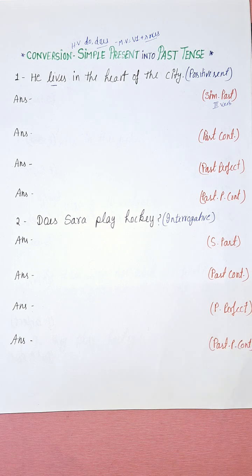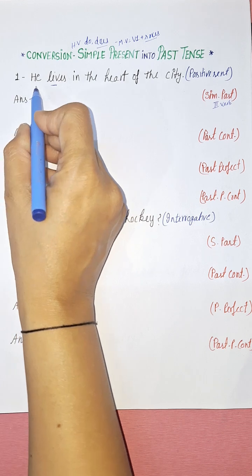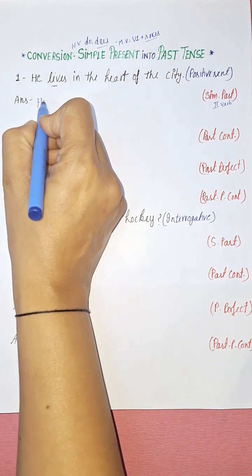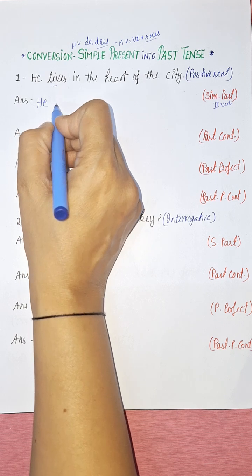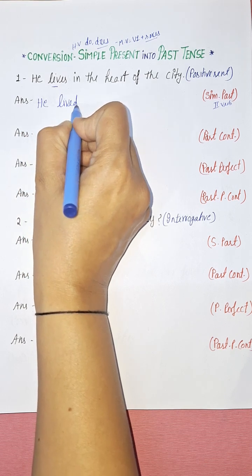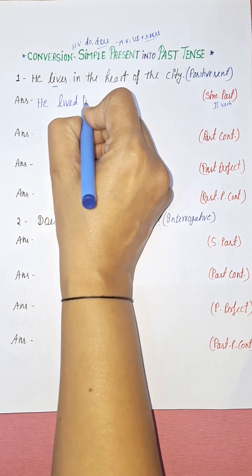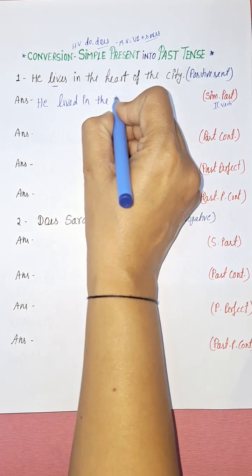Now let's convert this simple positive sentence into simple past tense. In simple past tense we use the second form of the verb. So 'he leaves in the heart of the city' will convert to 'he lived in the heart of the city.'